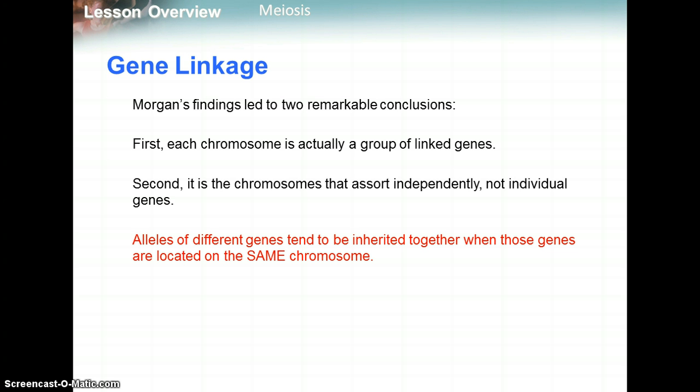Morgan's findings led to two remarkable conclusions. First, each chromosome is actually a group of linked genes. Second, it is the chromosomes that assort independently, not the individual genes on them. So alleles of different genes tend to be inherited together when those genes are located on the same chromosome.